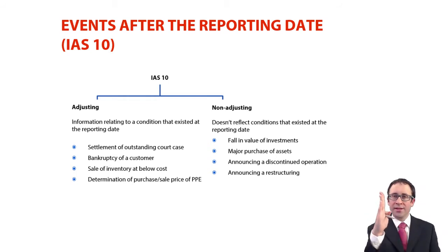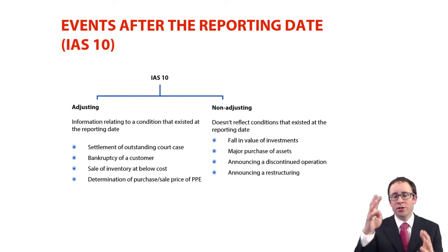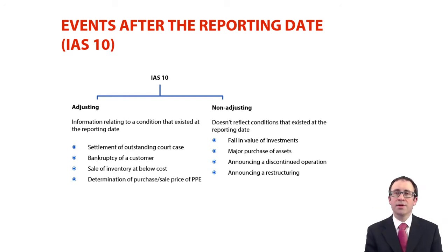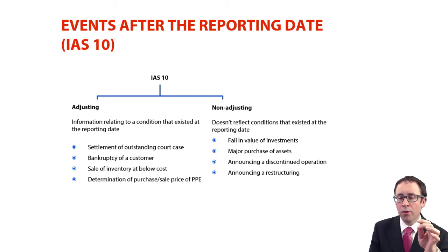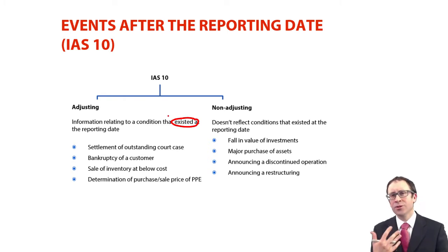Remember you've got your reporting date at the end of the year. Something happens between that date and the date the accounts are authorised for issue. Does whatever happens in that intervening period mean we need to adjust our reporting date figures, or do we leave them as they were and just make some form of disclosure because it was a material non-adjusting event? The key thing to look at is when that event takes place in the post-reporting date period — did the condition exist already at that reporting date, and does it now give us more information about that condition?